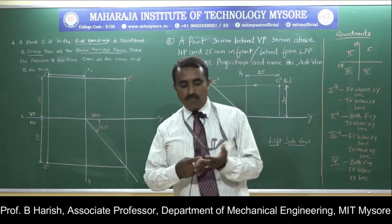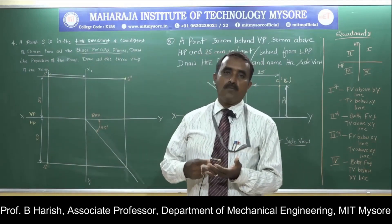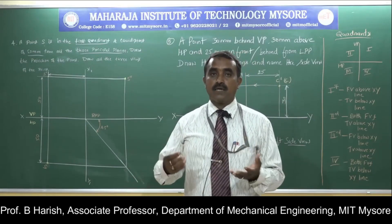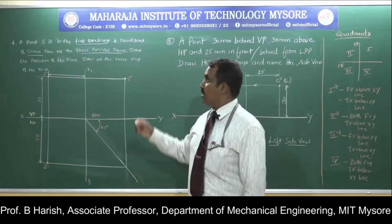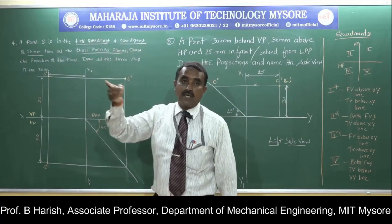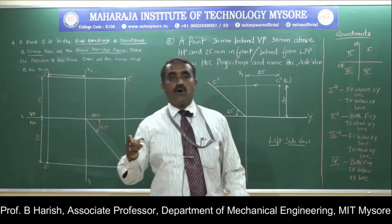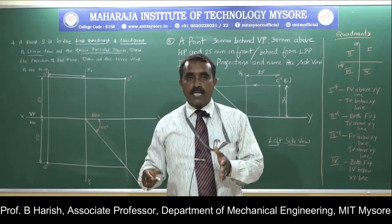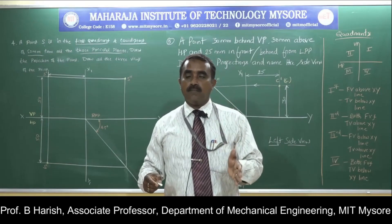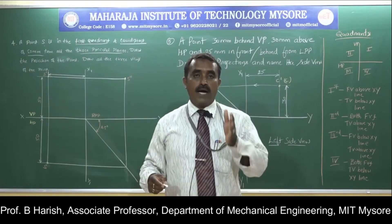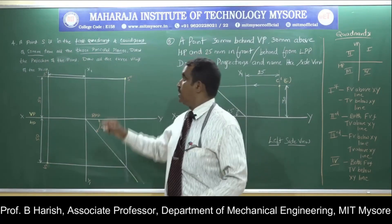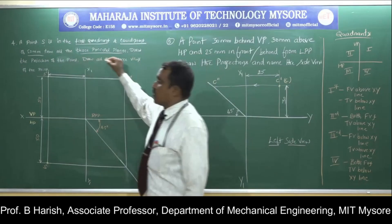What are the three principal planes? We have the vertical plane, horizontal plane, and profile plane. These three planes are called principal planes. So here, 50mm equidistance means it will have equal distance from all the three planes — that is from HP, VP, and PP. From HP 50mm, VP 50mm, and from profile plane also 50mm. That is equidistance.